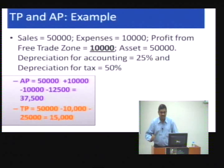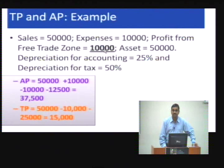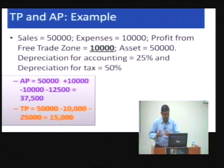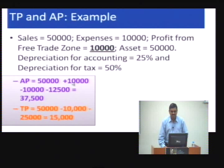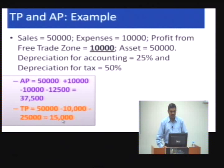To illustrate with a simple example: suppose sales is 50,000, expenses are 10,000, profit from a free trade zone is 10,000, the asset is 50,000, depreciation for accounting is 25%, and depreciation for taxation is 50%. The accounting profit comes to 37,500, while the tax profit comes to 15,000.